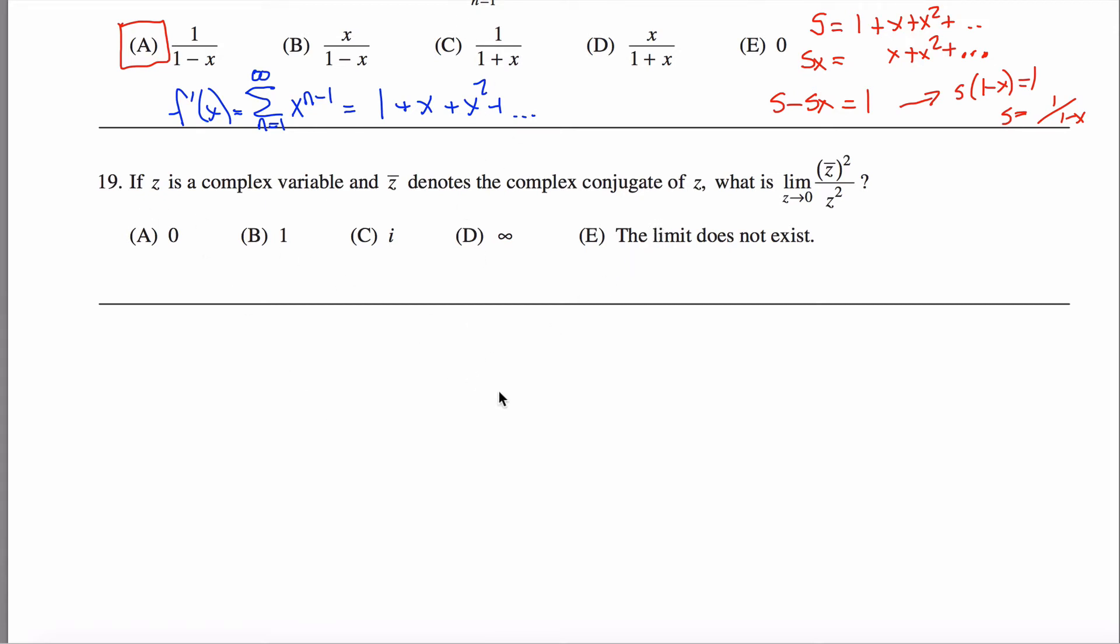Here are solutions to problem 19 off the GRE subject math practice exam. In this problem we're evaluating this limit, the limit of a complex variable. We're looking at the limit of the quotient of the square of the complex conjugate over the square of the complex number.